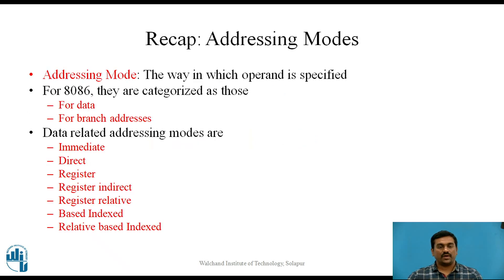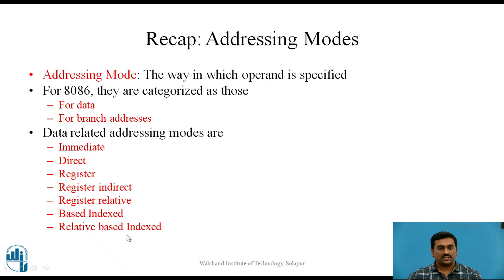In the last video we defined addressing mode as the way in which an operand is specified. For the 8086, they are categorized as those for data and those for branch addresses. In the previous video we studied in detail data-related addressing modes, which are classified into 7 types: immediate, direct, register, register indirect, register relative, based indexed, and relative based indexed.